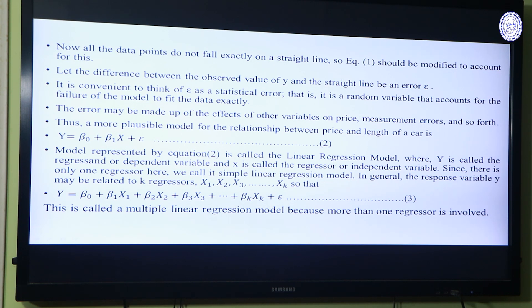Here, y is called the regressant or dependent variable — it depends upon x, or the regressor or independent variable. The independent variable is given exogenously; we cannot control it. But we are trying to find out how y is depending upon x. So y is the dependent variable or regressant, whose value we are trying to find out from this regression. Since there is only one x or only one independent variable in our model, this is called the simple linear regression model.